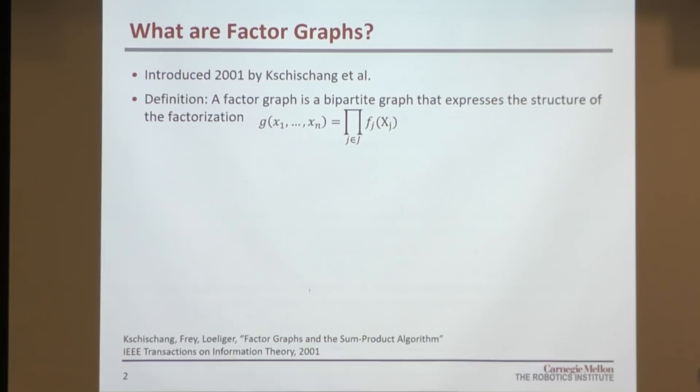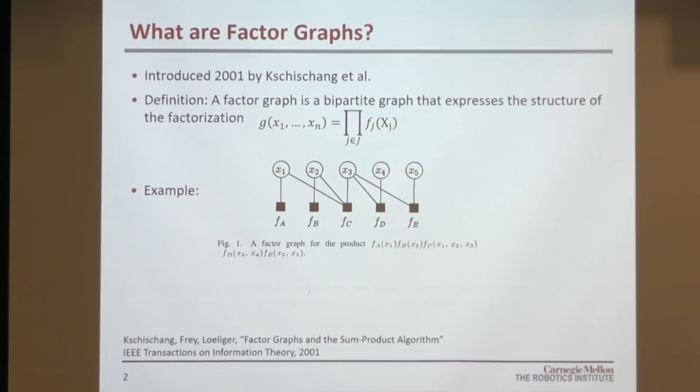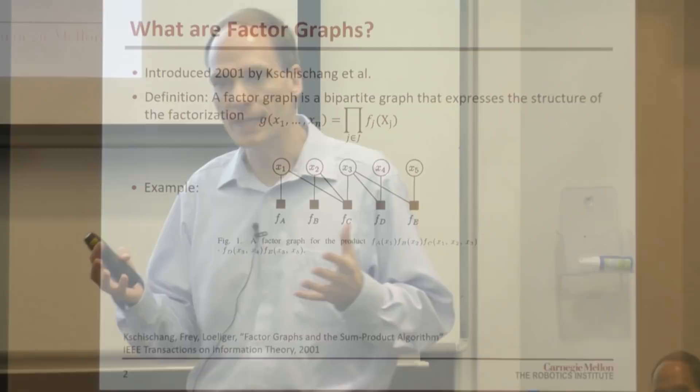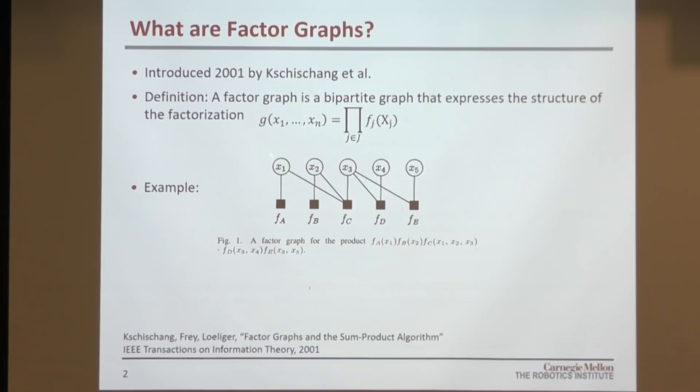Factor graphs were introduced in 2001 by Kschischang. The definition is that a factor graph is a bipartite graph that expresses the structure of the factorization of a function. This becomes clearer with an example from the same paper. A bipartite graph means we have two different types of nodes: factor nodes, shown as squares, and variable nodes, shown as circles. The factor FA is a function of one variable, X1. The factor FC is a function of three different variables, X1, X2, and X3. That's a very fundamental relationship between variables and functions or factors.